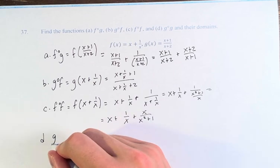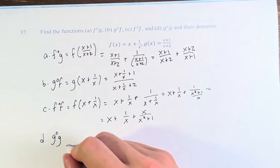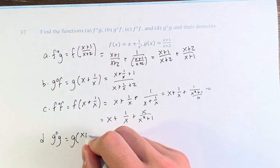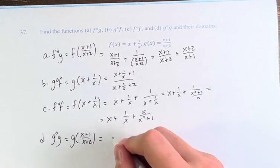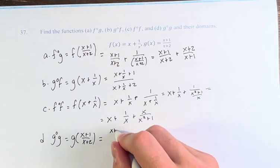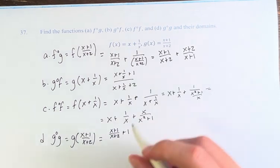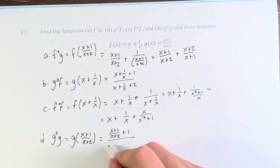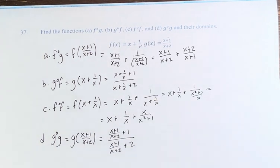Finally, for g of g, this is g of itself — g of (x plus 1 over x plus 2). So this is (x plus 1 over x plus 2) plus 1 for the top, over (x plus 1 over x plus 2) plus 2 for the bottom.